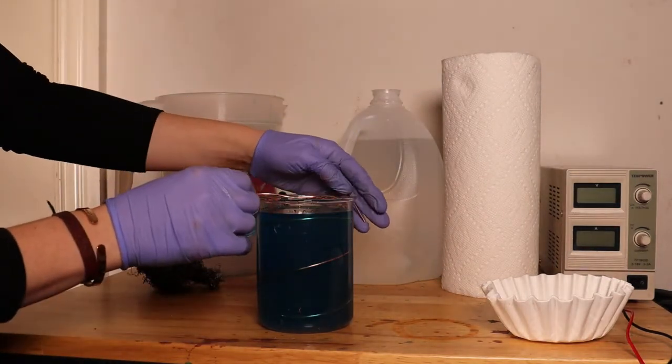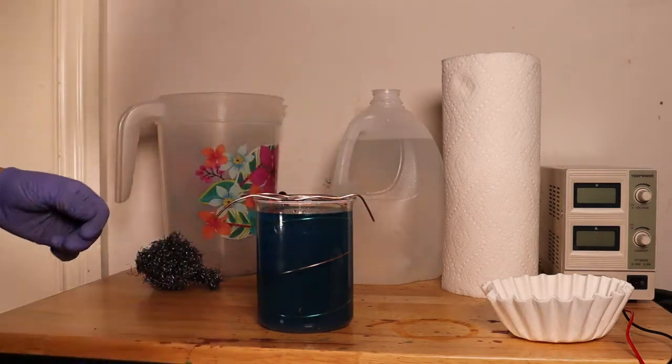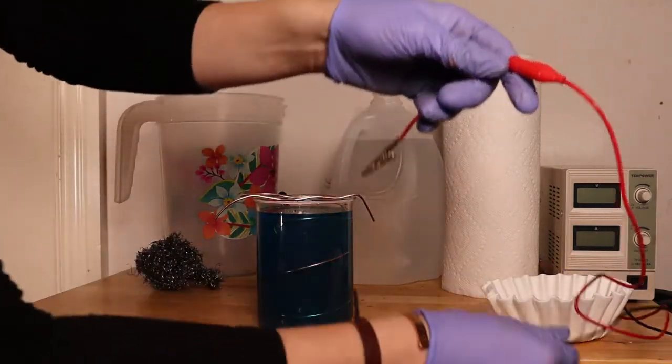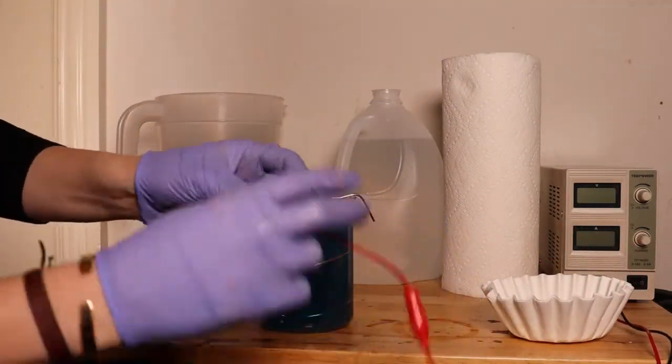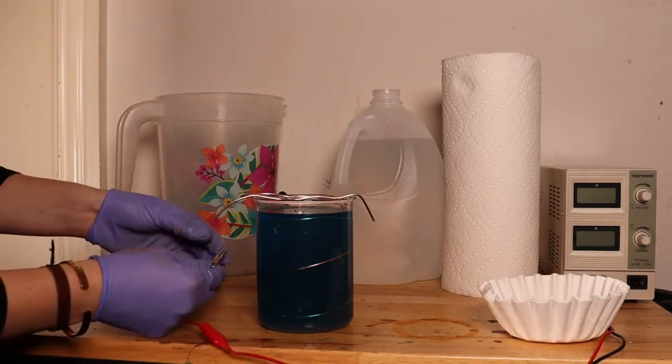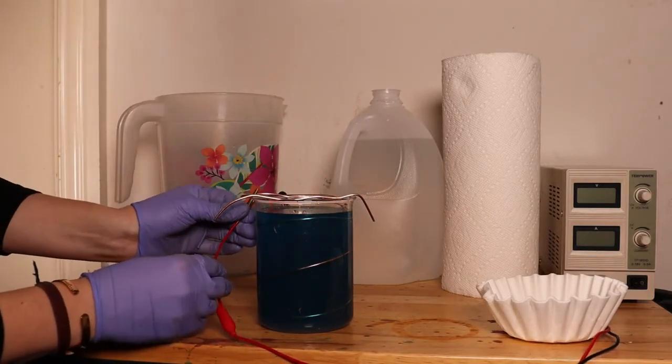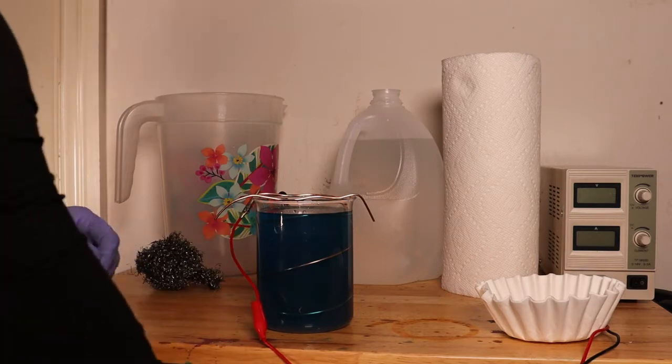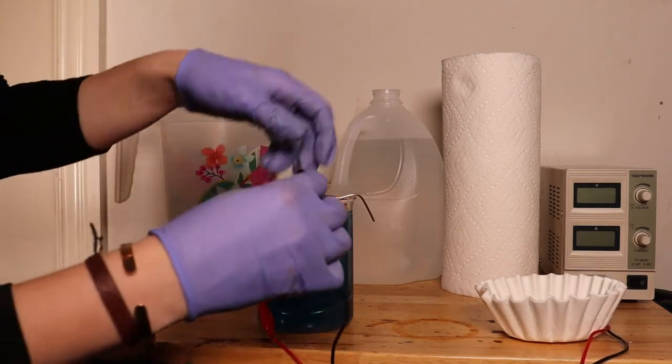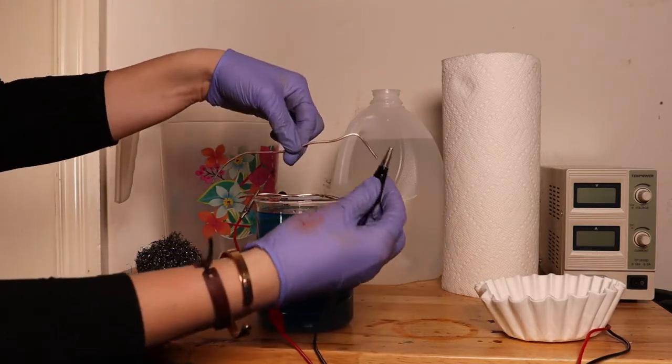I used my 12 gauge wire to cut my bus bar that I'm going to place on top of the beaker. Then I'm going to connect my red wire to the anode, which is the wire that lines the beaker. And then I'm going to use the black wire, and I connect that to the bus bar or the cathode.